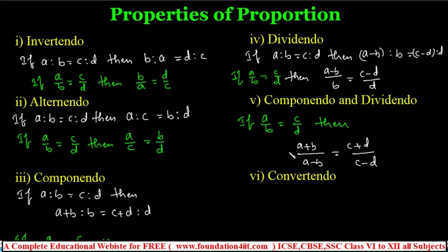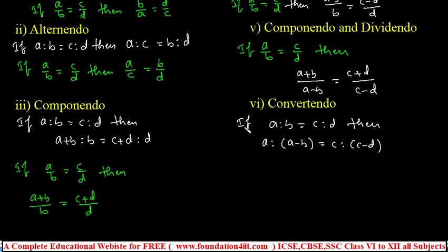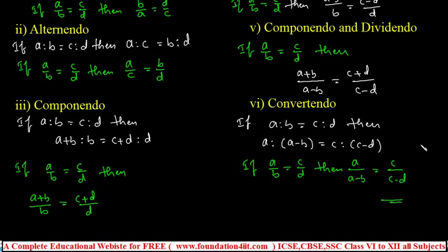Now convertendo: this involves subtraction in a slightly different form. If a is to b equals c is to d, then a is to a minus b equals c is to c minus d. In fractions: if a by b equals c by d, then a by a minus b equals c by c minus d. This is convertendo.